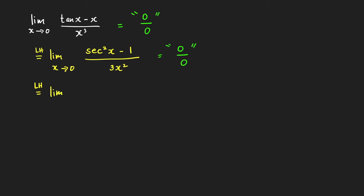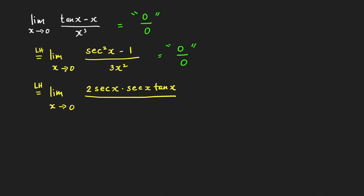Applying L'Hôpital's rule, we get the limit as x approaches 0 of the derivative of secant squared x. We treat this as (secant x) quantity squared, so applying the power rule with the chain rule gives 2 times secant x times the derivative of secant x, which is secant x tangent x. The derivative of 1 is 0. The derivative of 3x squared in the denominator is 6x.